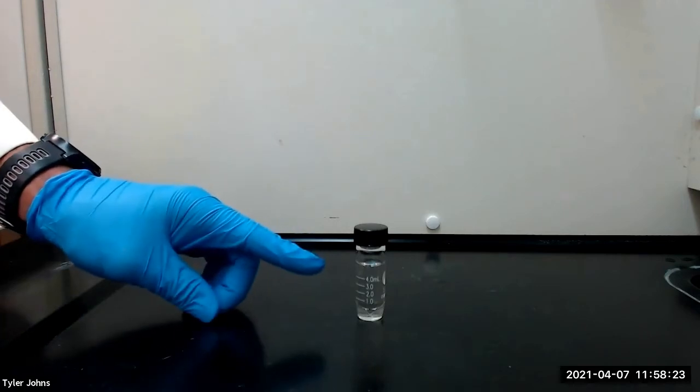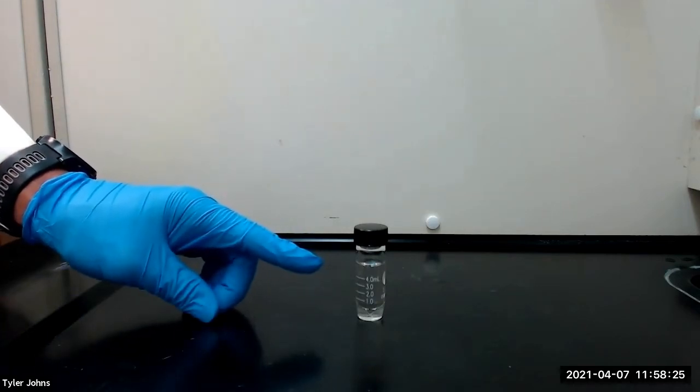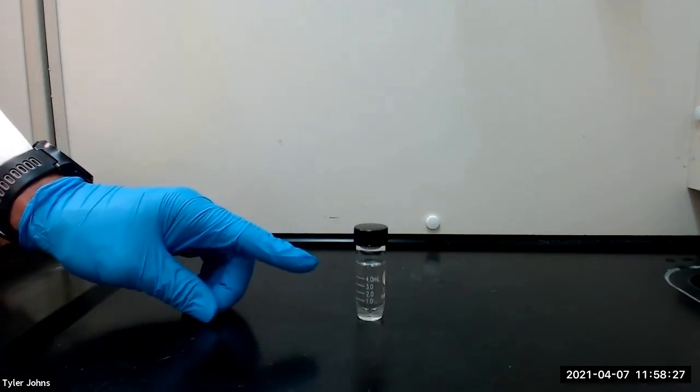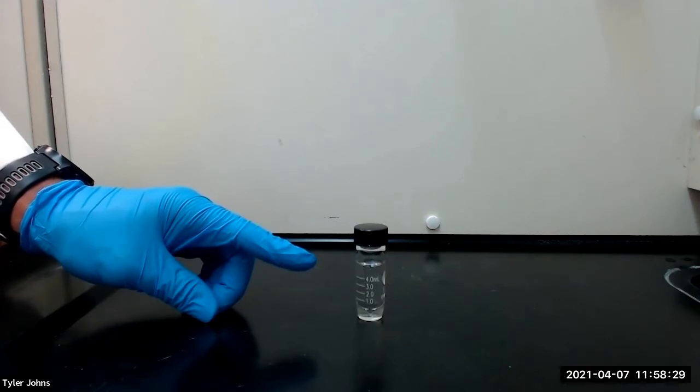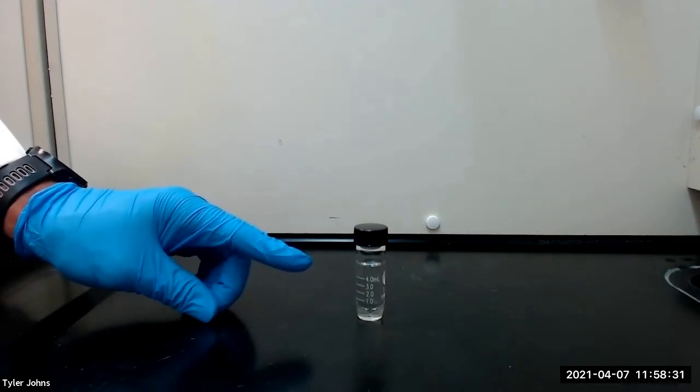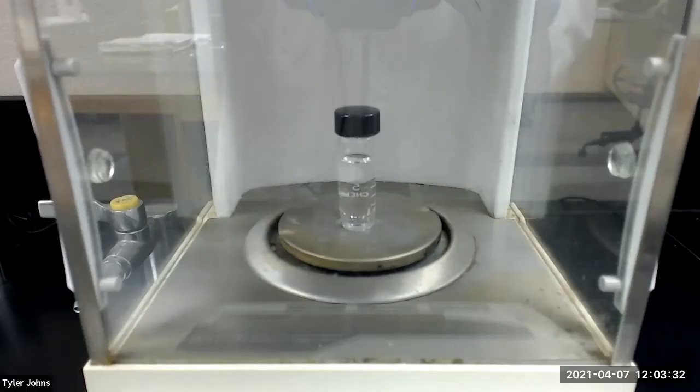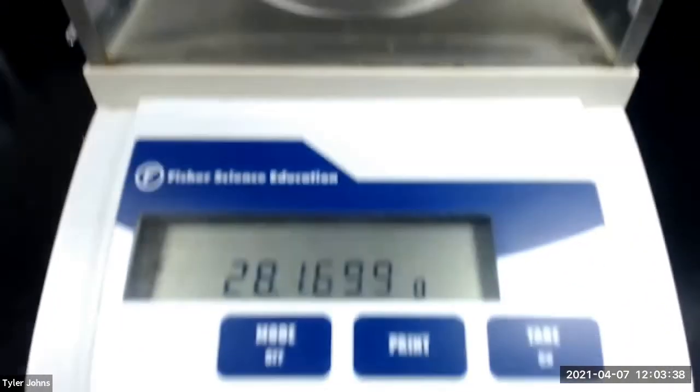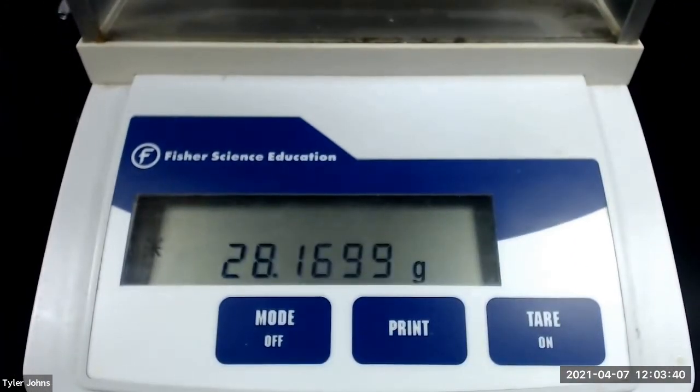After collecting the ester distillate in the pre-weighed 5 milliliter conical vial, we next need to determine the mass of the conical vial plus the purified ester. The mass of the pre-weighed 5 milliliter conical vial plus the purified ester product is 28.1699 grams.